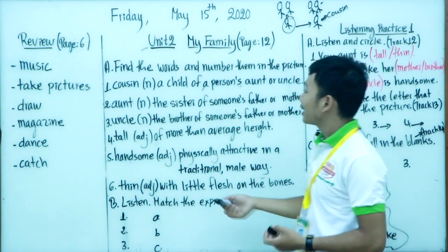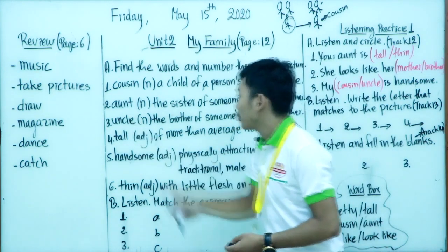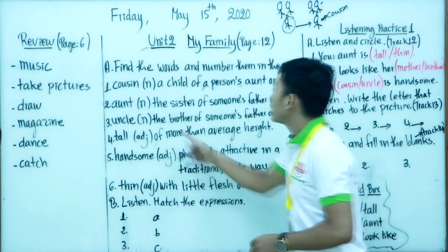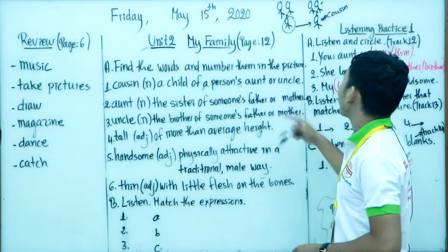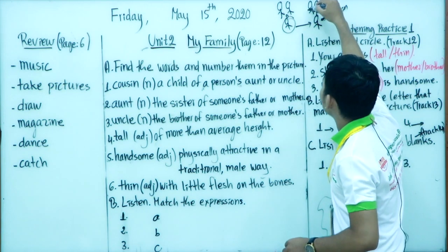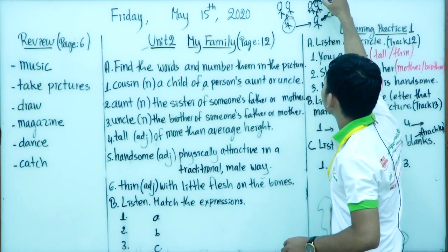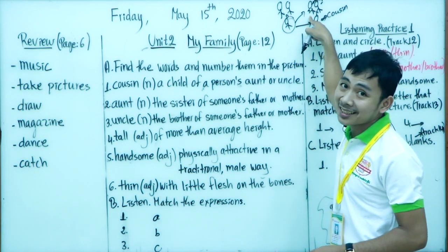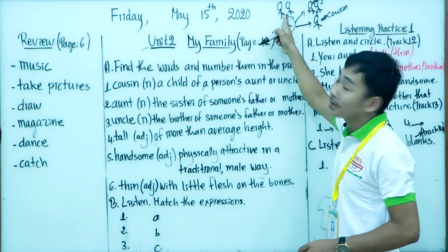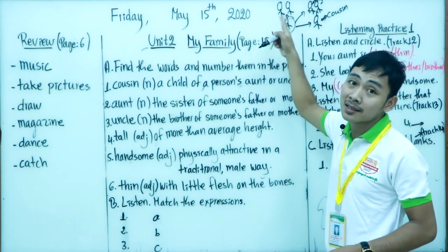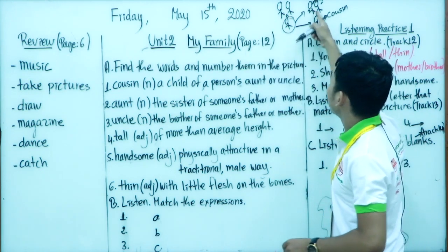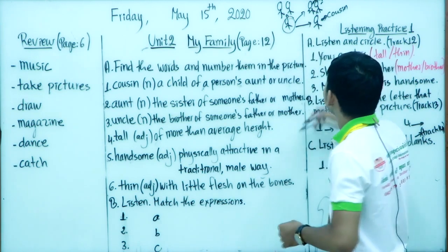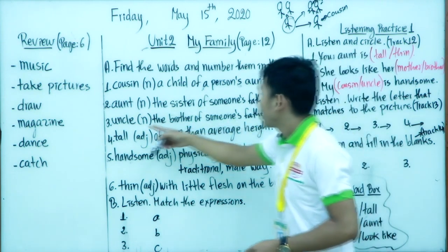The next word is 'aunt.' Aunt means the sister of someone's father or mother. For example, who is she? She is your aunt, because she is your father's sister. That is why she is your aunt.